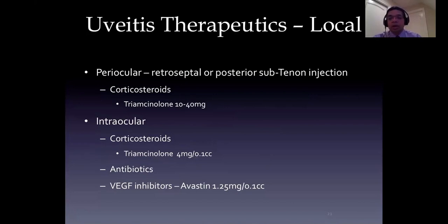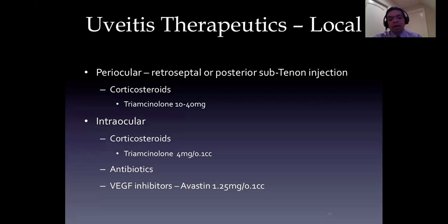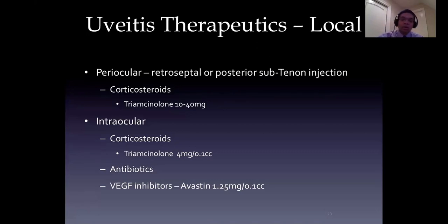For periocular corticosteroids, I usually use triamcinolone, a longer-duration corticosteroid - about 20 to 40 mg, 20 mg in pediatric patients and 40 mg in adults. I often repeat these every two to three weeks and can give them multiple times around each eye depending on the response and intraocular pressure elevation. IOP elevation after subtenon or retroseptal corticosteroids can be very difficult to manage because those patients, if they have a severe response, may end up needing surgery for glaucoma - it's very difficult to go back in and remove the corticosteroid. Often these patients see a glaucoma specialist for appropriate management.